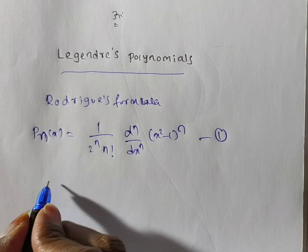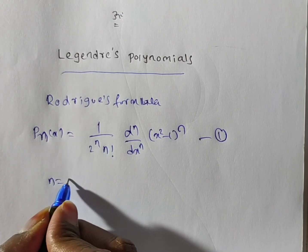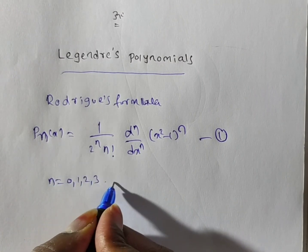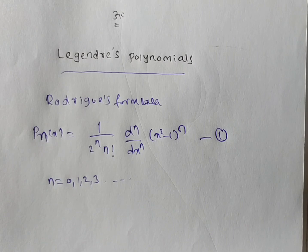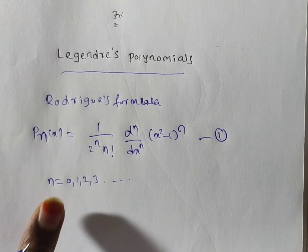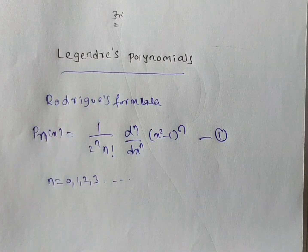Here, if you put n equal to 0, 1, 2, 3 and so on, it gives the Legendre polynomials. So now we have to find out the Legendre polynomials.